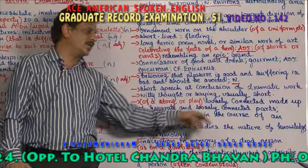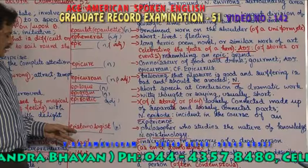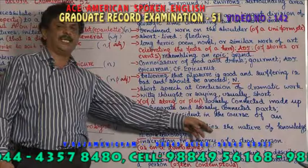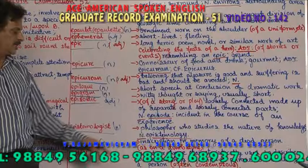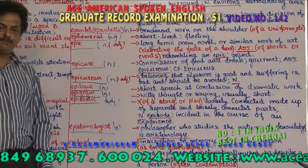Episodic — of a short story or a play, loosely connected, made up of separate and loosely connected parts. Different episodes are connected — that is episodic. Epistemologist — a philosopher who studies the nature of knowledge. The noun is epistemology.